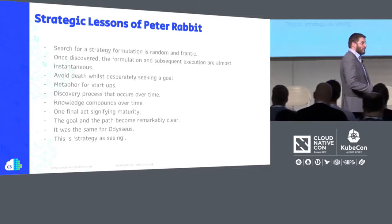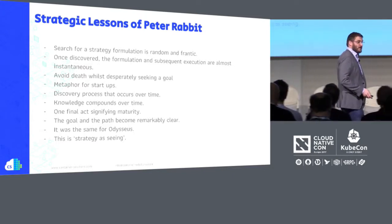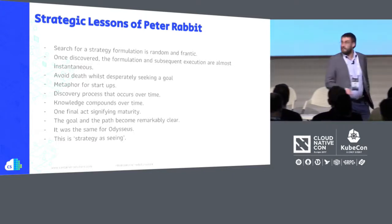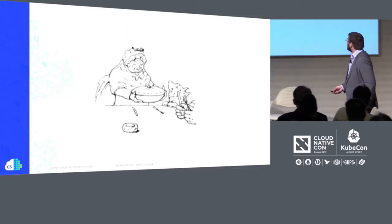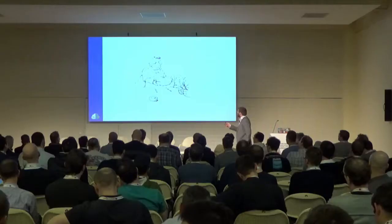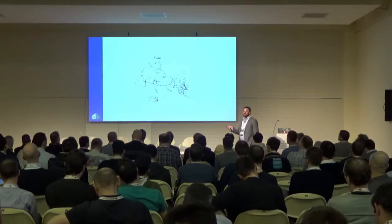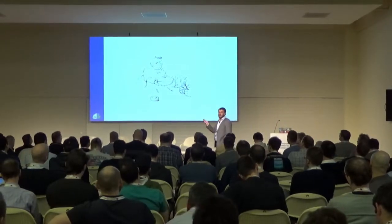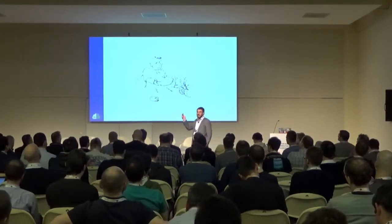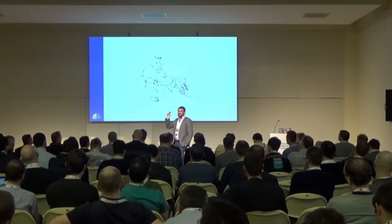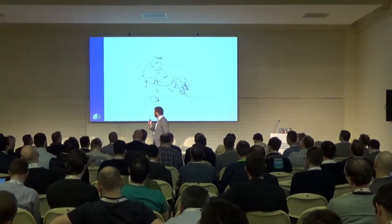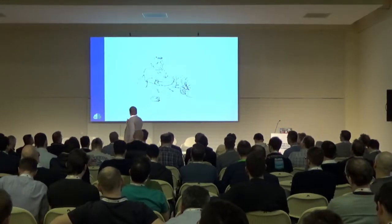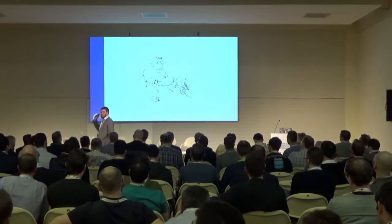So Odysseus, just like Peter Rabbit, is a story about a trial by fire until final maturation is reached and then the goal is achieved almost instantaneously. This is what we mean by strategy of seeing. Many startups don't succeed — many, like Peter's father, end up in a rabbit pie.